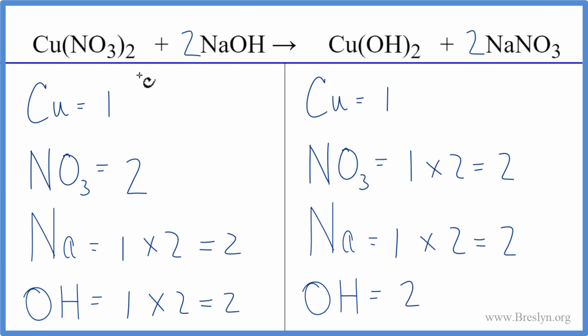So you can see how it helps. If you have a nitrate here, it stays together, and you have it here. Count it as one item. Same for the hydroxide. You have it here and here. Makes the balancing a lot easier.